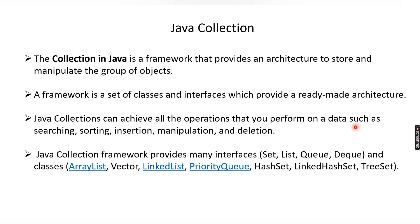This is the first video where we are just understanding what Java collection is. The different types of classes present inside Java collections are ArrayList, Vector, LinkedList, PriorityQueue, HashSet, LinkedHashSet, and TreeSet. All of these are classes which implement the particular interfaces.